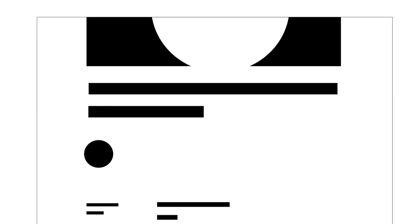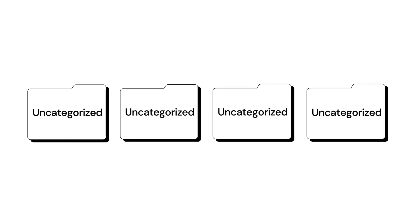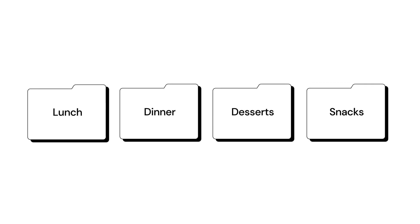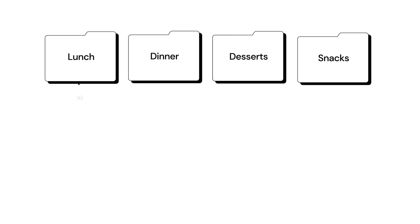Every post we create is assigned a specific category, with the default category called uncategorized. We can create new categories and rename them. Categories are hierarchical, and you can create subcategories.